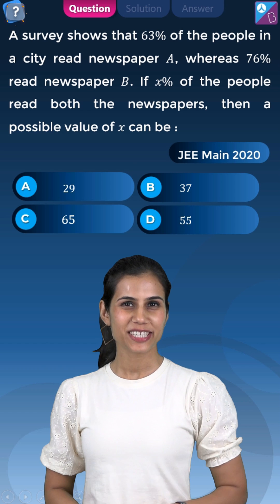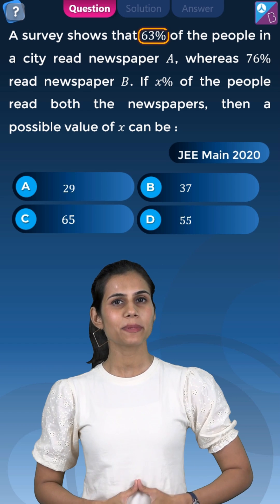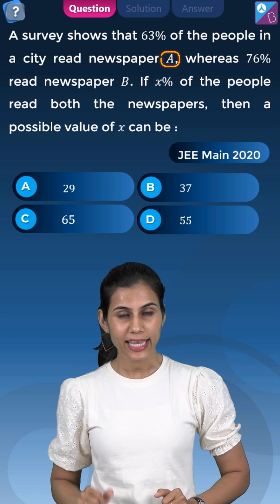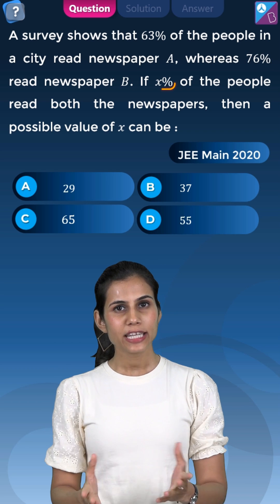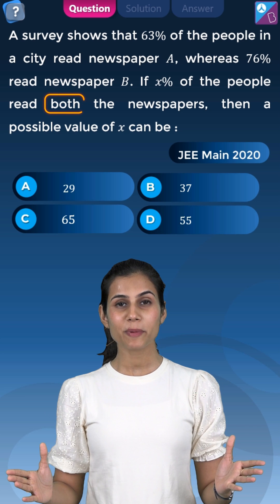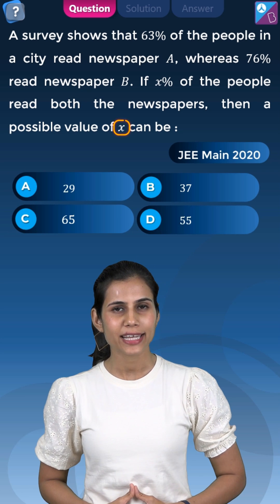This is a very interesting question. It says, in a survey, it shows that 63% of the people read newspaper A, whereas 76% of the people read newspaper B. If X percent of the people read both the newspapers, what out of the given four options is a possible value of X?